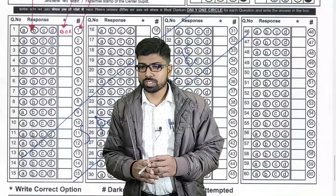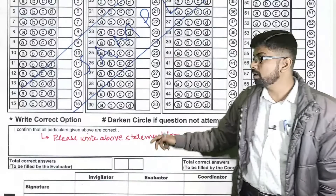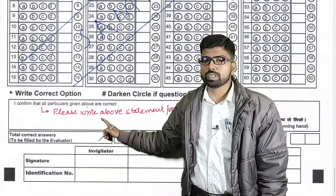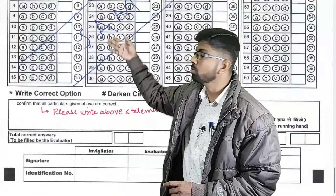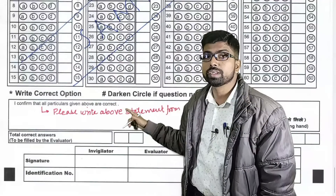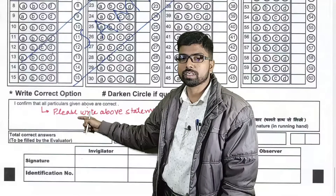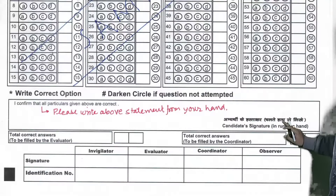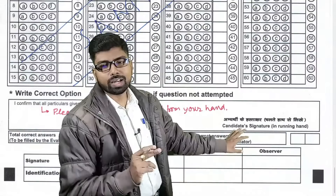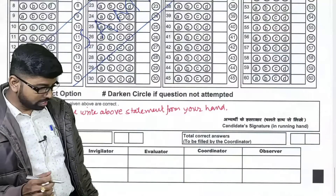There is a declaration box on the OMR sheet that reads: 'I confirm that all the particulars given above are correct.' You must write this exact statement in your own handwriting. There is also a space for the candidate's signature — you must sign with your running hand, not in capital letters.